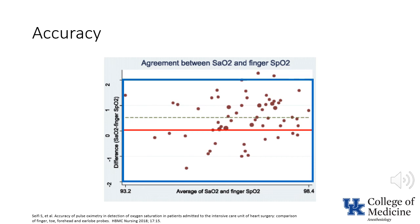In addition, the pulse oximeter was fairly precise. The blue box shows the bounds of plus or minus 2% compared to the values measured on the arterial blood gas. It's evident that values reported by the pulse oximeter were almost all within 2% of the value determined from the ABG. It must be kept in mind, however, that all of these values range between 93 and 98%.